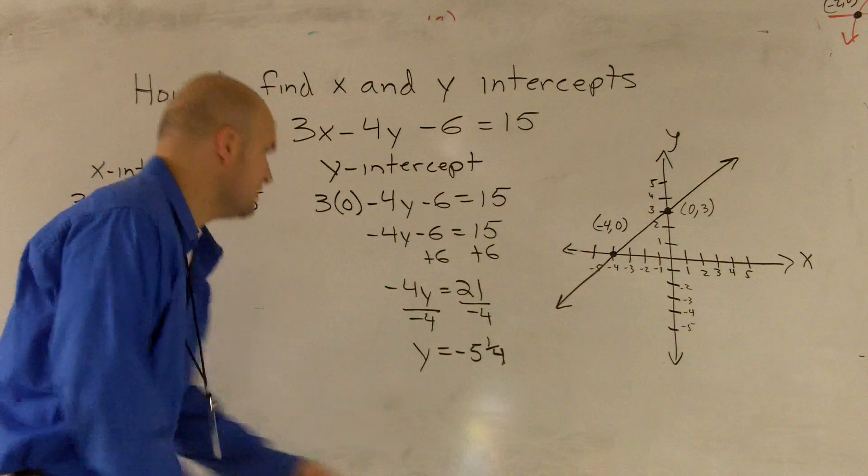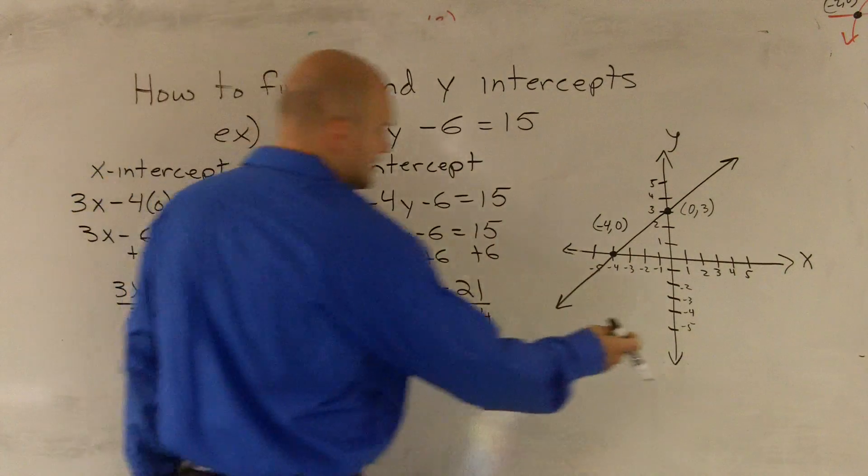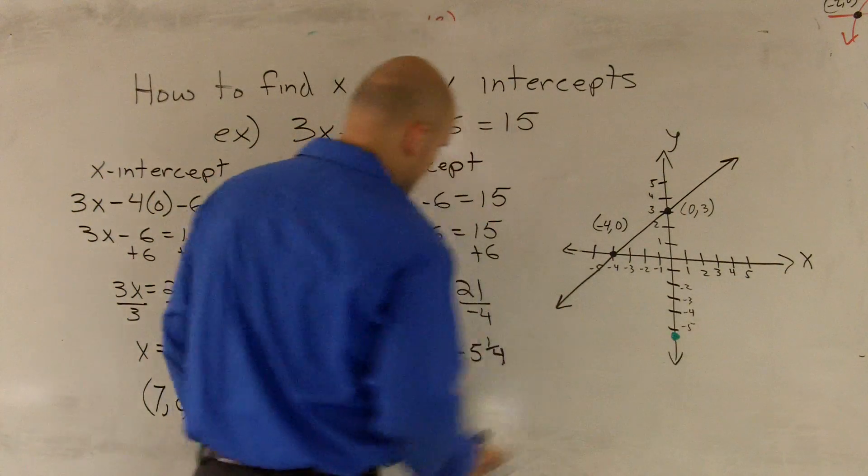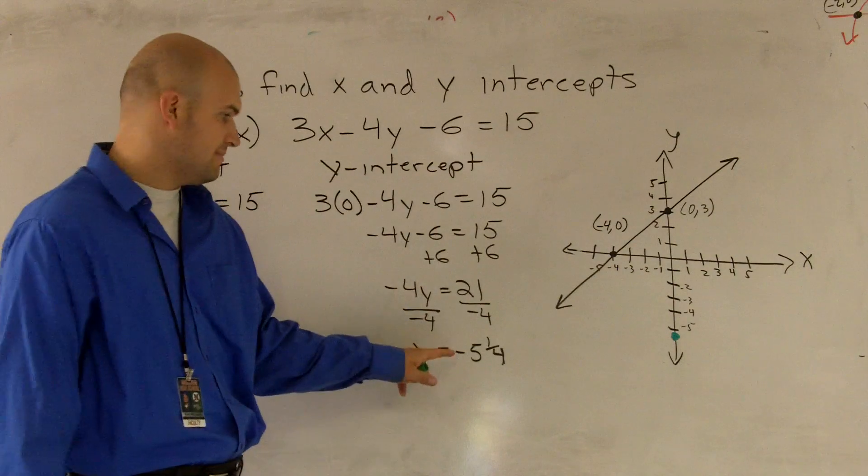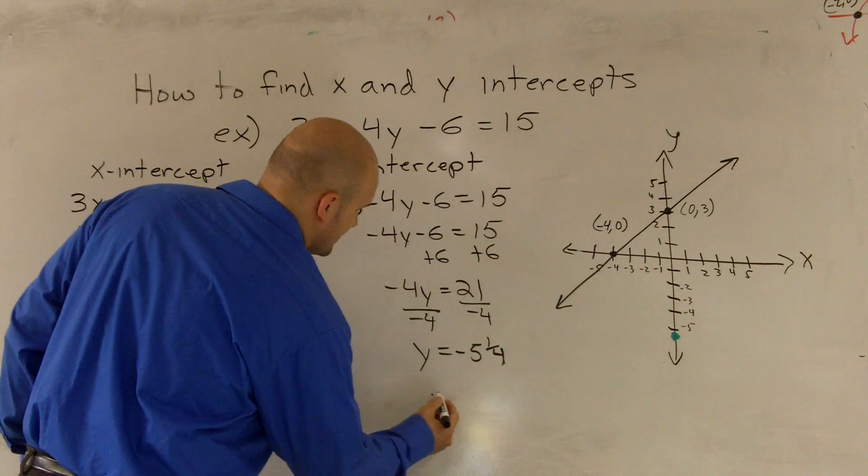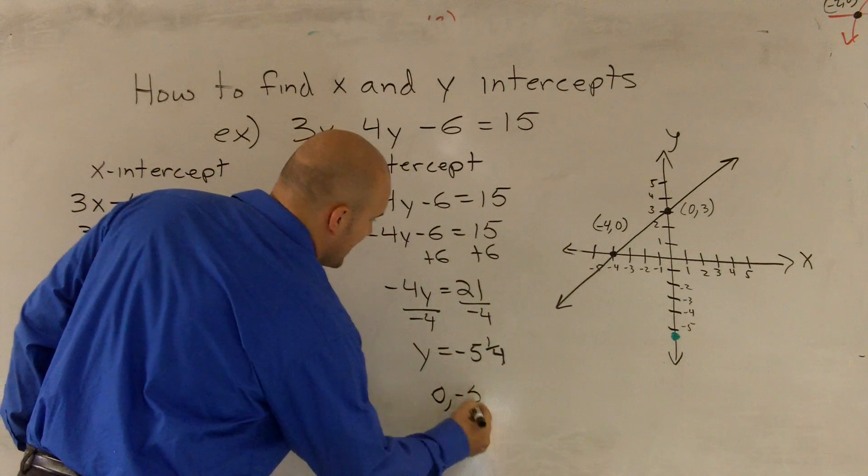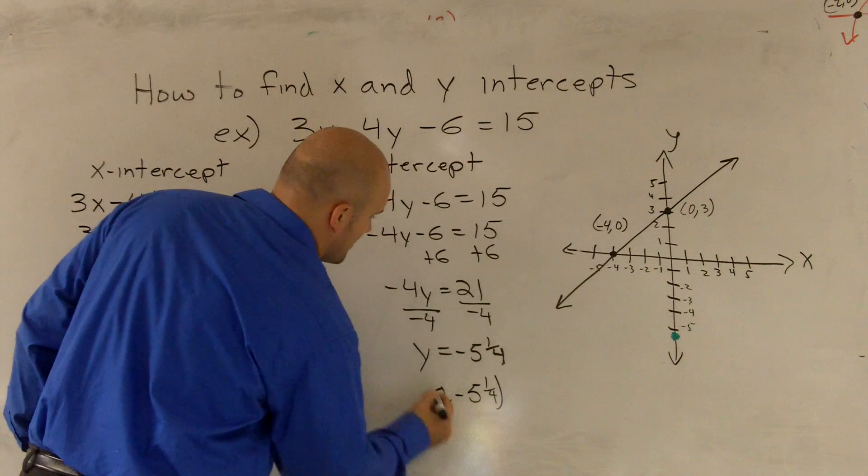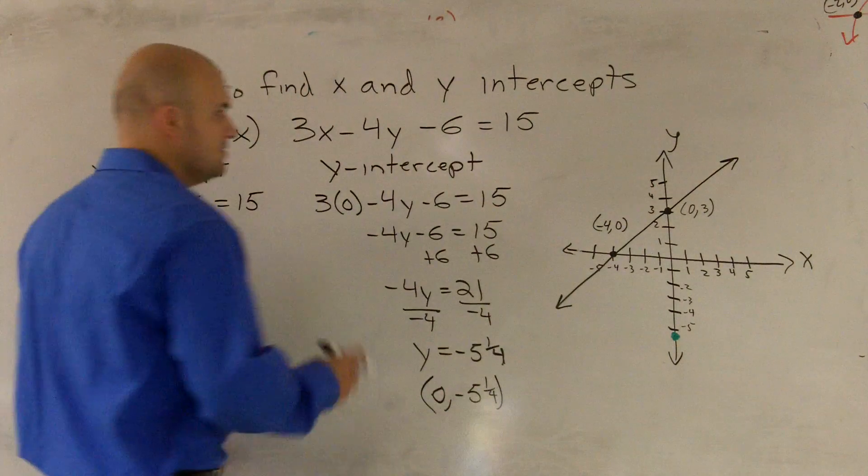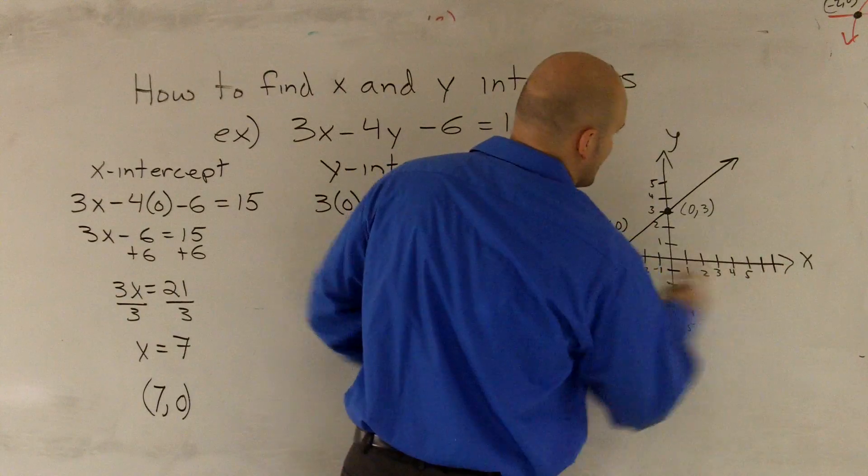But roughly, this graph I'm graphing down here would look like this. Because my negative 5 and 1 fourth would be my y-intercept, which would be 0 comma negative 5 and 1 fourth. And then my x-intercept would be 7 comma 0.